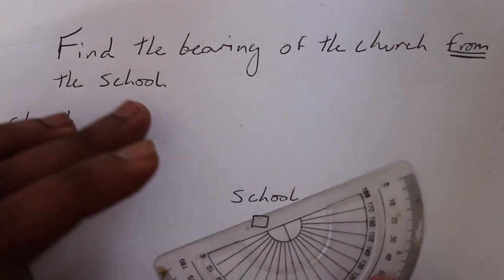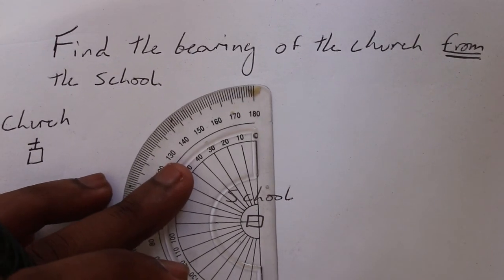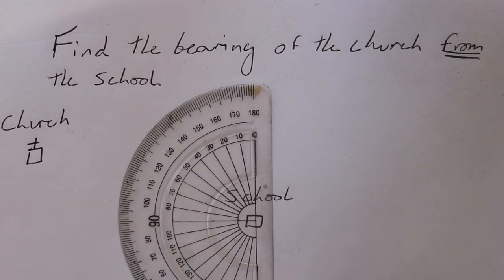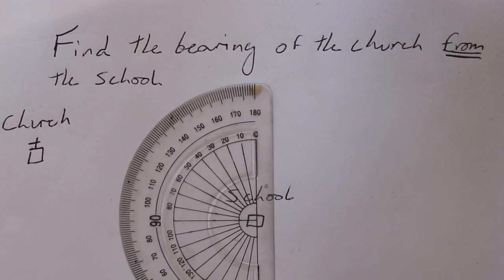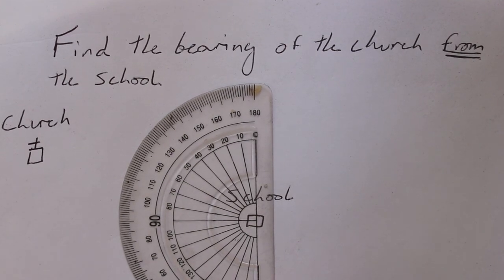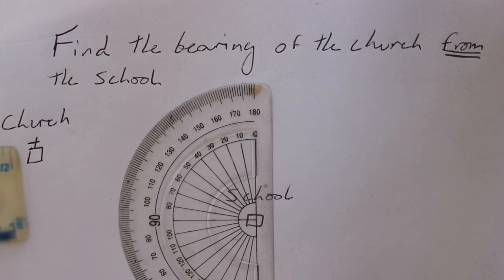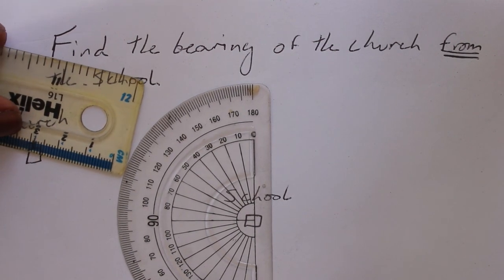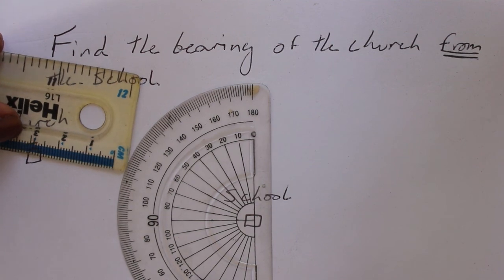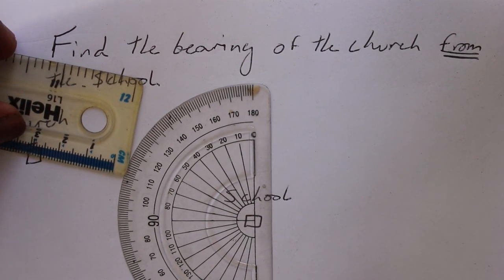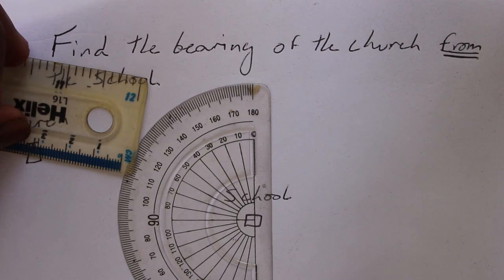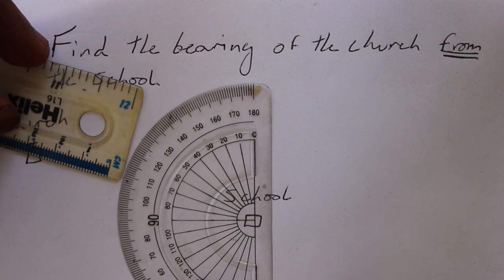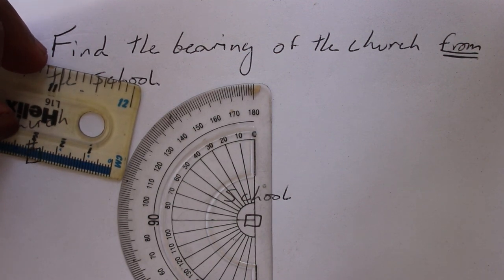So we, like what we did before, we flip the protractor. So now you have 180 degrees on this side which gives you a total of 360. So what we do now is we continue counting from 0 to 180 and finding the church. Try to find it, try to line it up.